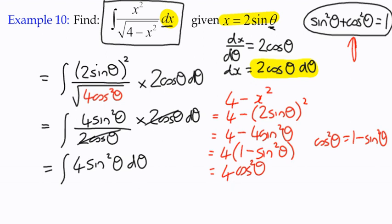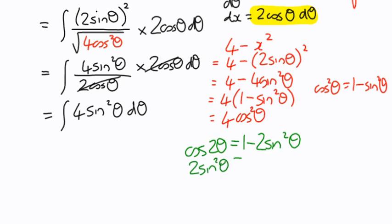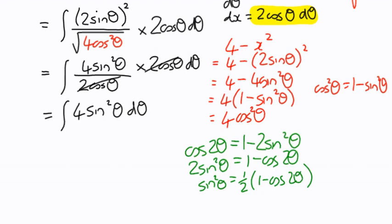We've simplified it, but there's a problem: we can't directly integrate sin²θ. We need another trig rule — the double angle formula. cos2θ = 1 - 2sin²θ. Rearranging gives 2sin²θ = 1 - cos2θ, so sin²θ = ½(1 - cos2θ). We're going to substitute that in.